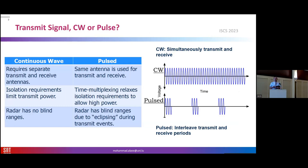In principle, we can have two types of waveforms: one is continuous wave and the other is pulse wave. In continuous wave, we transmit continuously without switching between transmit and receive modes.